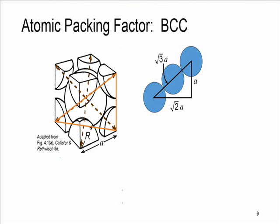To find the atomic packing factor for the BCC crystal structure, we first need to find the relation between the radius of an atom and the side length A — the relation between R and A. Bear in mind that many metals have a unit cell of cubic geometry.